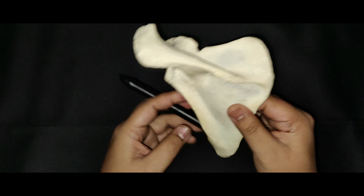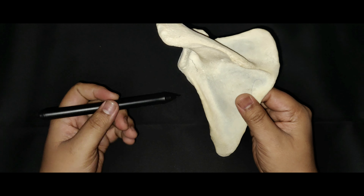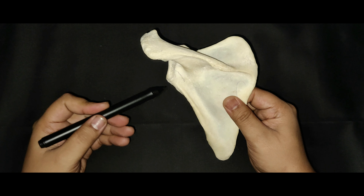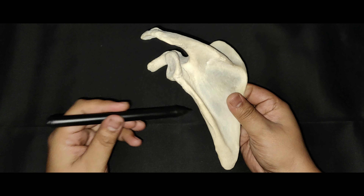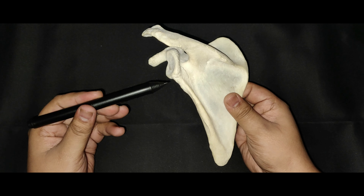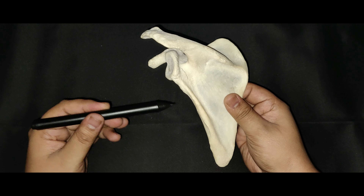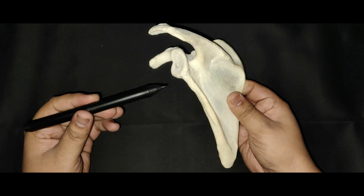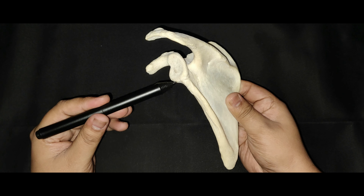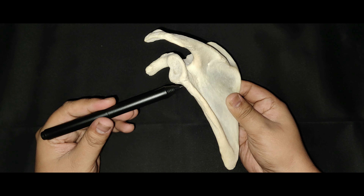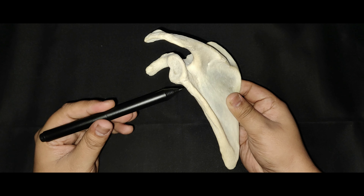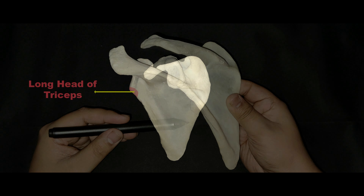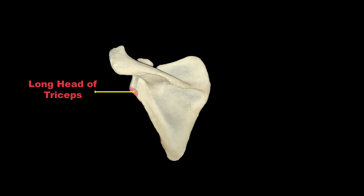The lateral border is the thickest border and extends from the inferior angle to the glenoid cavity. The infraglenoid tubercle is present at its upper end, just below the glenoid cavity. The long head of the triceps muscle arises from the infraglenoid tubercle.